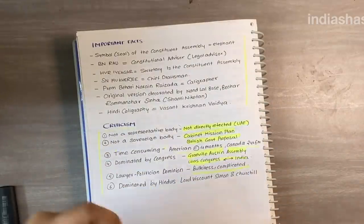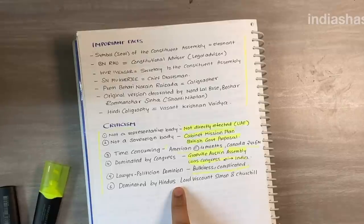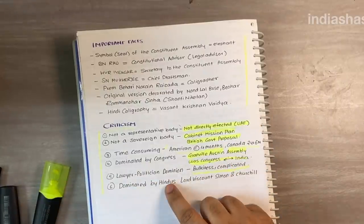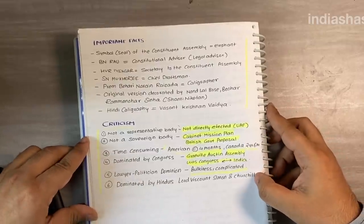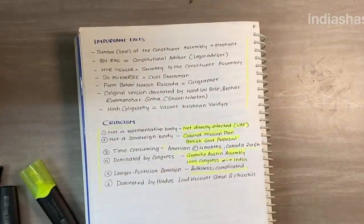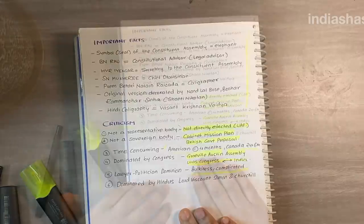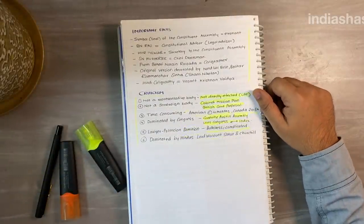There is also criticism that the constituent assembly was dominated by Hindus. According to some critics it was a Hindu-dominated body. Lord Viscount Simon called it a body of Hindus. Similarly, Winston Churchill commented that the constituent assembly represented only one major community in India. But these are baseless allegations, as there were representatives from minority communities as well.